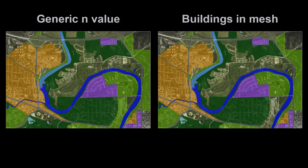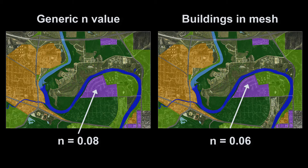For the last method, the roughness values for areas that are not buildings should be representative of the remaining area. This value will be less than the value applied to the large generic building land use type.